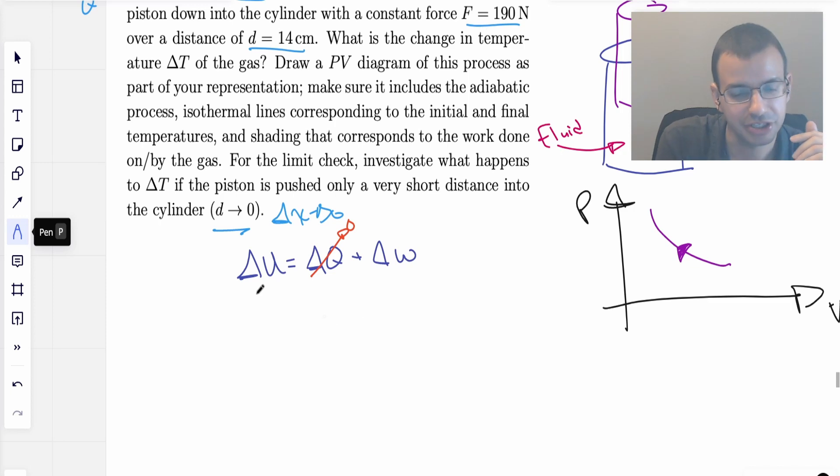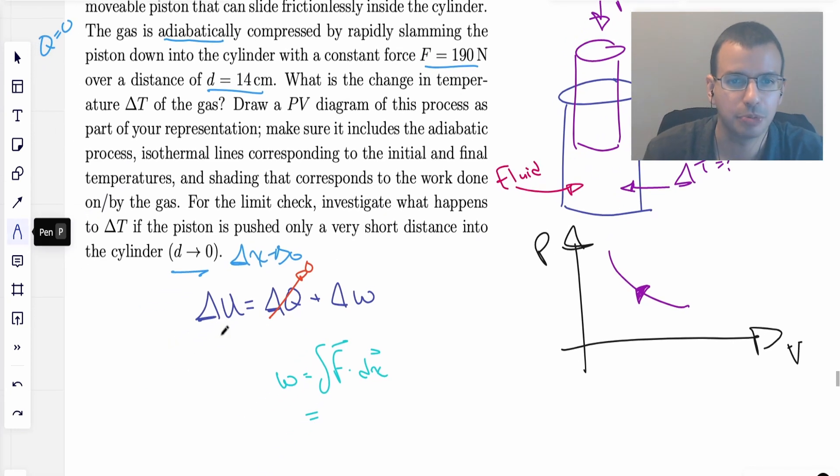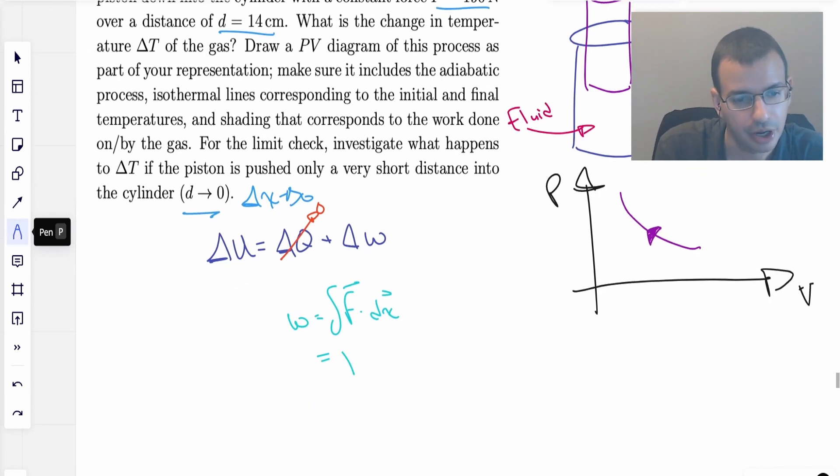We're told that we have a force over a distance, so work equals integral F dot dx. This is a constant force, and I'm going to assume that the force is pointing down. The dot product just becomes multiplication because they're parallel. This becomes F delta x, so the work done is force times distance moved.